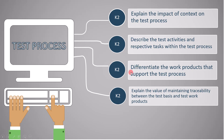The third topic is, differentiate the work products that support the test process. We have seven common test activities. After each test activity, we will get the output, which is referred to as a work product. In this topic, we need to remember which work product belongs to which activities. The last topic is, explain the value of maintaining traceability between the test basis and test work products. Here, we will learn about traceability.